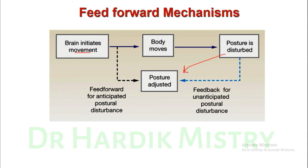Both the defect signal and the original plan of movement are sent to different areas of the brain. These areas analyze what defect is occurring in the movement, make a correction, and again send a signal to the body parts for the corrected movement — adjusting posture accordingly. This pathway represents feed-forward for anticipated postural disturbances, while the other pathway is feedback for unanticipated postural disturbances. For more detail, refer to videos on the cerebellum.